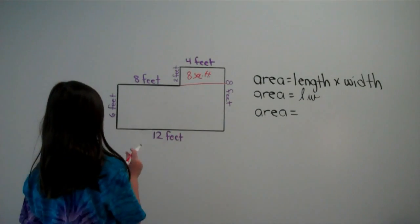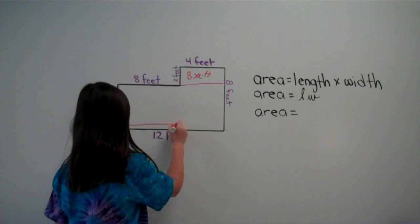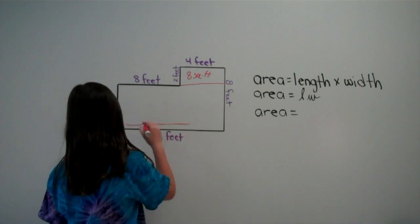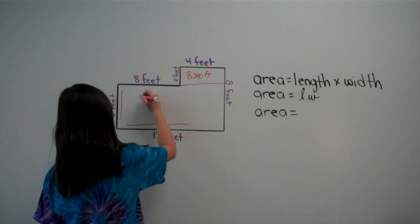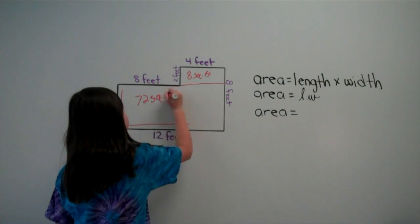And then you would have to do this rectangle, which the length is 12 feet, and the width is 6 feet. You would do 6 times 12 equals 72 square feet.